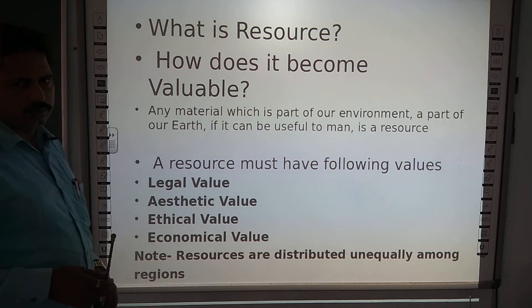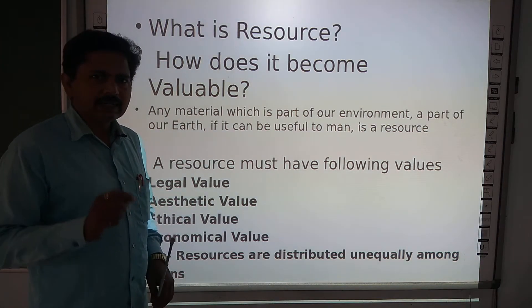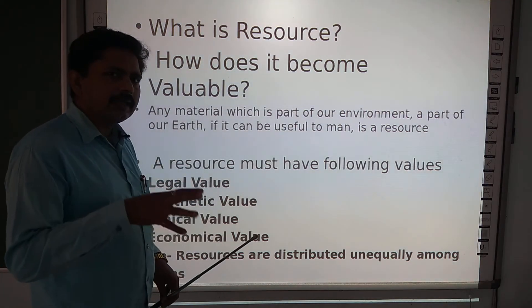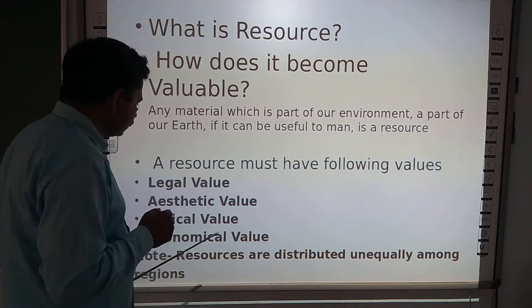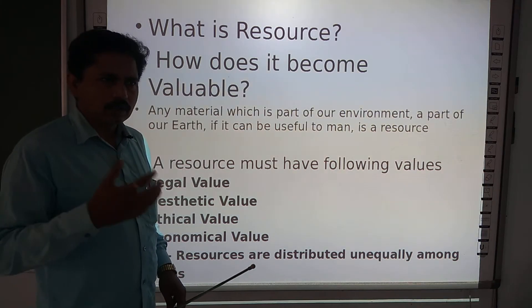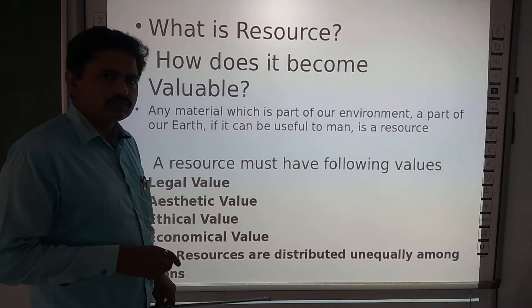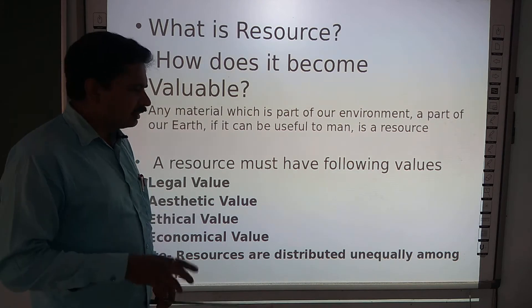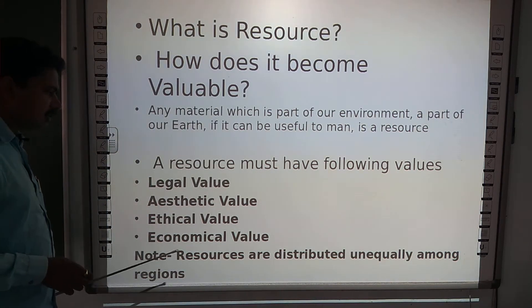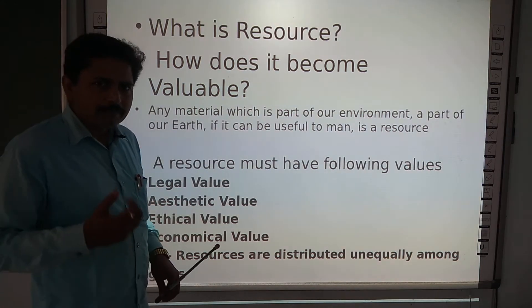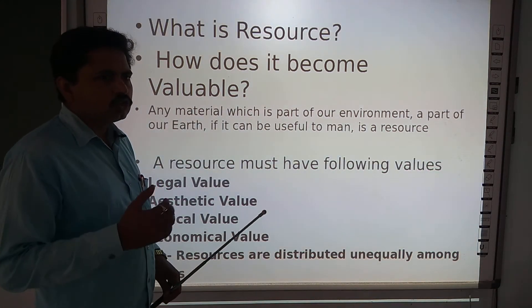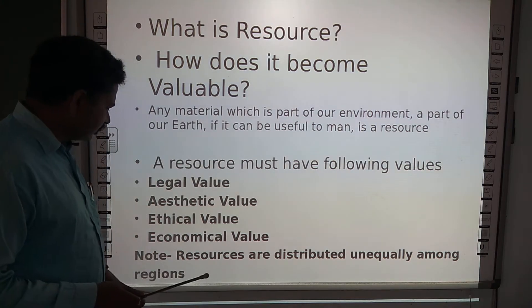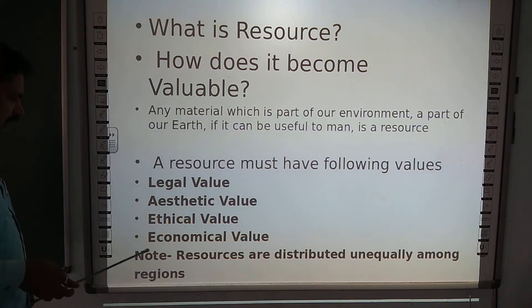Next is ethical values. Ethic is a word used for unwritten law and is closely associated with culture. Ethical values means that whatever resources we have should be culturally acceptable — they must be acceptable within our cultural framework. Along with it, there is economic value — it must be economically valuable. Whoever is producing it should get profit from that production. If such conditions are met, then we call it a resource.